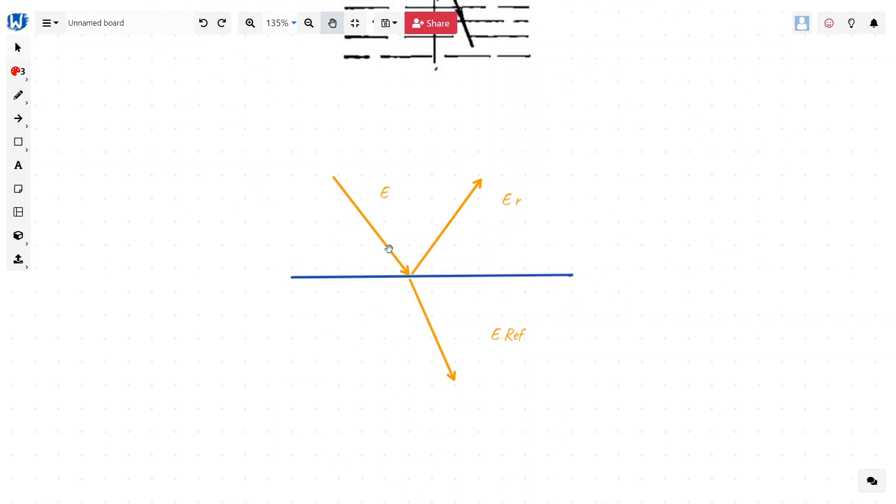Suppose a total energy E is coming towards the water and some part is getting reflected, we are calling it Er, and some part is getting refracted, we are calling it Eref. By law of conservation of energy, we can say that total E equals E reflected plus E refracted.